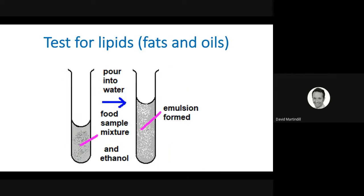The test for lipids is a bit more complicated. What you have to do is you have to mix the food sample with some ethanol, alcohol. Give it a good shake. Pour it carefully into some distilled water. And if you form an emulsion, which is a cloudy white suspension, then you've got a positive test. You know that that original sample had lipid.